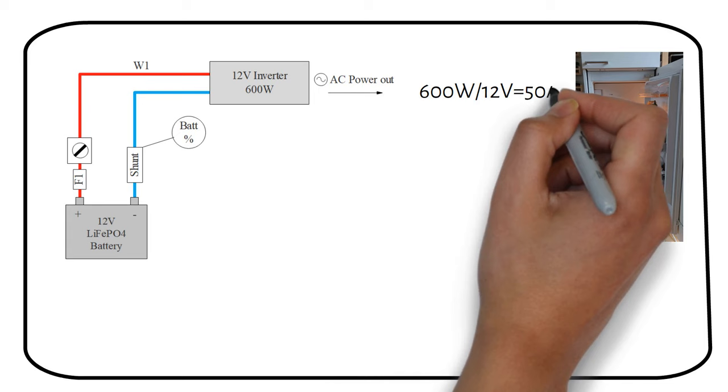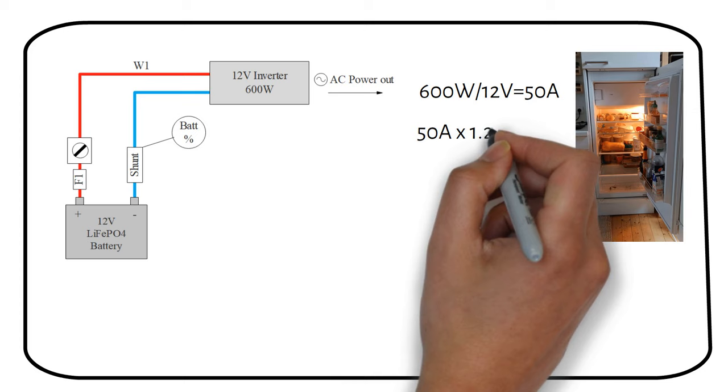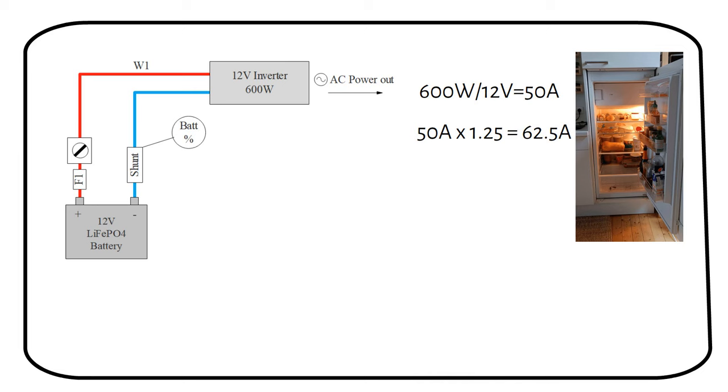Next, we have to apply a safety factor. This is to account for the higher surrounding temperatures. We use a safety factor of 125%. So we multiply the 50 amps by 1.25 to get 62.5 amps. Now that we know the current through the wire, including the safety margin, we must look for a wire that can handle this current.